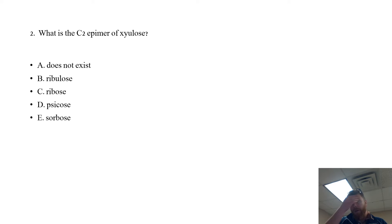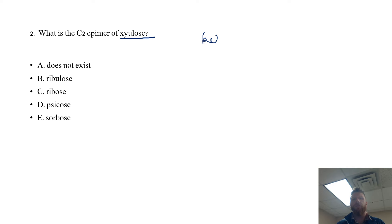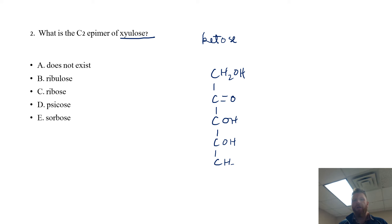This next question is: what is the C2 epimer of xyulose? What I need you to remember about this is that xyulose is a ketose. So whenever you write this out: carbon number one is CH2OH, carbon number two is your carbonyl group, carbon number three is OH on the right-hand side, number four is OH on the right-hand side, and carbon number five is CH2OH.